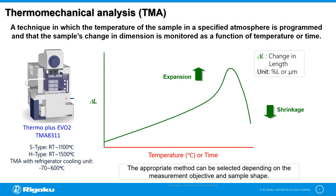Thermomechanical analysis or TMA is a technique in which the temperature of a sample in a specified atmosphere is programmed, and the sample's change in dimension is monitored as a function of temperature and time. Here is a model data of a TMA curve plotted against temperature. The vertical axis is the change in length, or delta L, quantified in percent or micrometers. An increasing TMA curve denotes expansion, while a decreasing TMA curve means shrinkage. The appropriate measurement mode can be selected depending on the measurement objective and the sample shape.